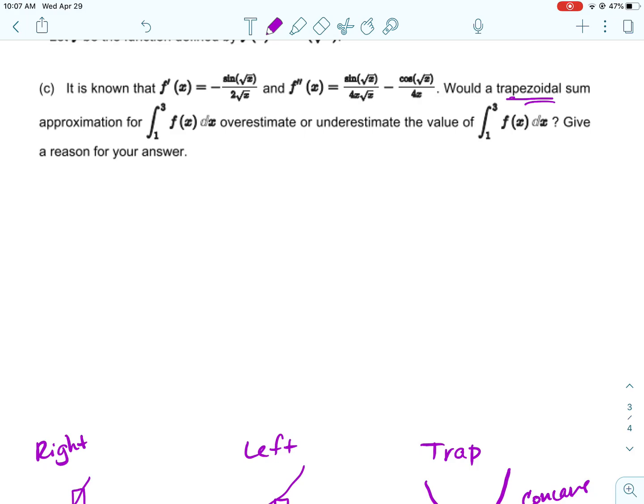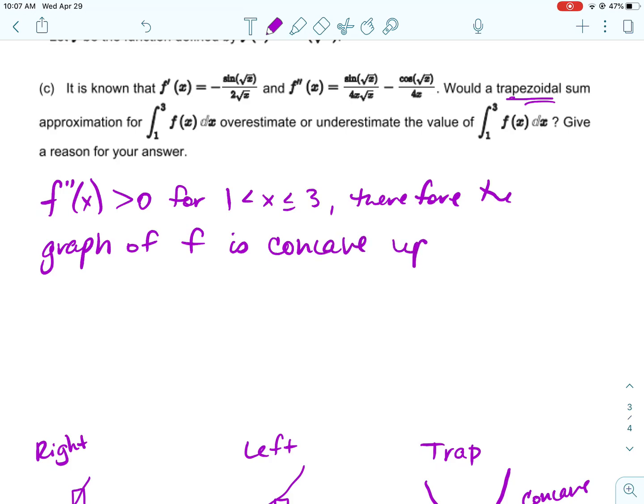So they give you both the first and second derivative. If it had asked left or right, you would need to make sure you use the first derivative. But because it's asking trapezoidal, the only one that matters is the second derivative. And so you just need to know if in this region from one to three, if the second derivative is positive or negative, then you can do that. In this case, by looking at the graph, the second derivative is greater than zero for all the x's between one and three, which is what we're looking at. So we're looking at on that interval or integral.